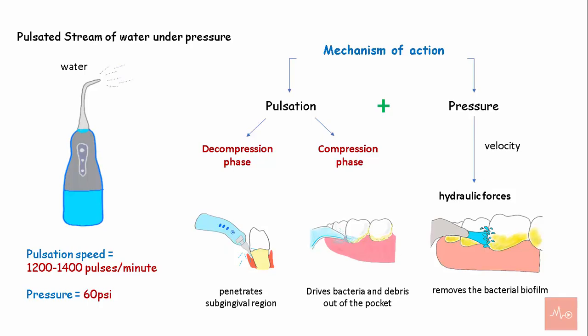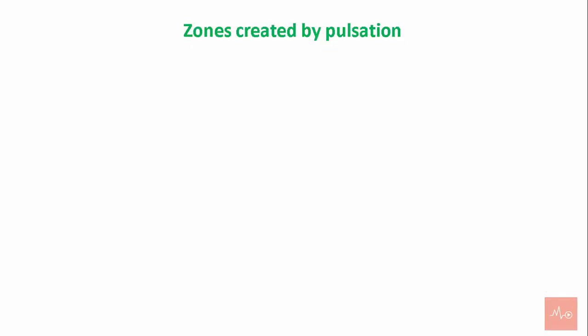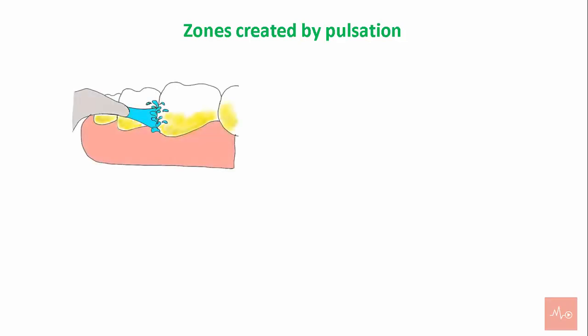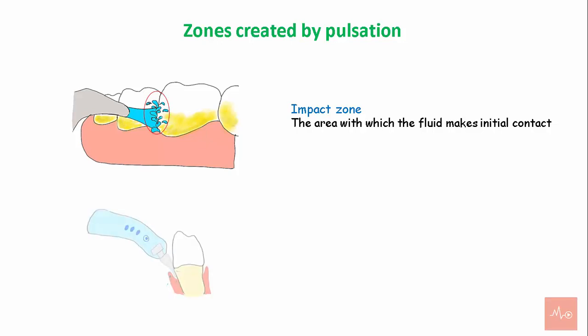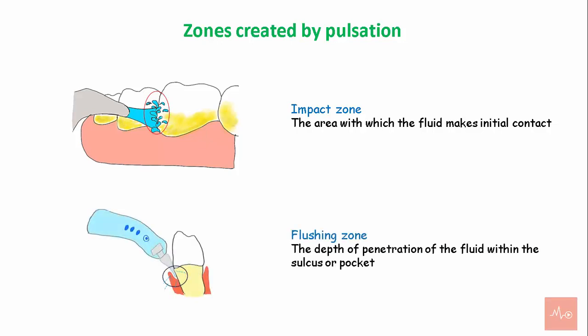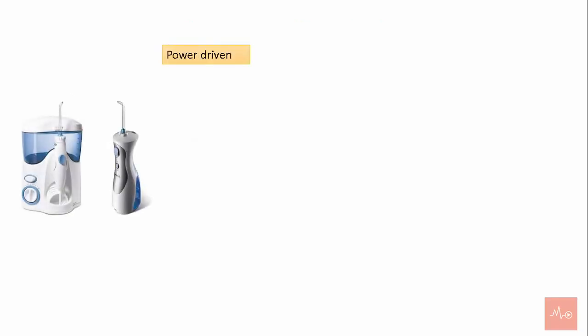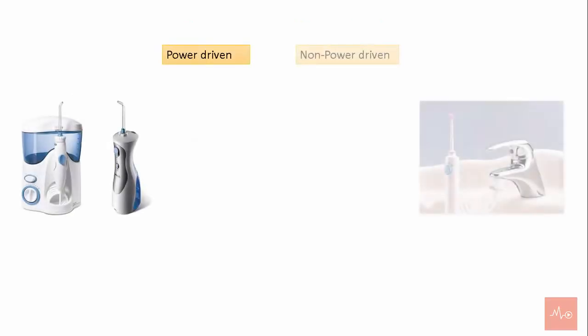There are zones created by pulsation: the impact zone, which is the area with which the fluid makes initial contact, and the flushing zone, which is the depth of penetration of the fluid within the sulcus or the pocket.